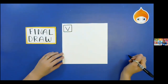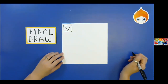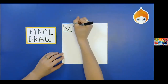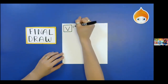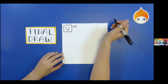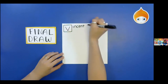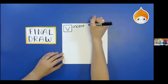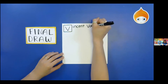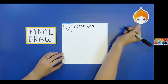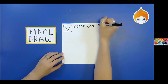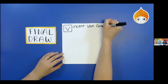Now let's continue on and write Vincent Van Gogh's name: I-N-C-E-N-T, leave enough space for his last name. V-A-N, some more space, G-O-G-H.